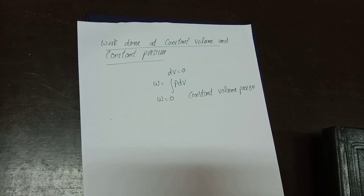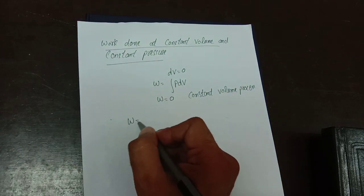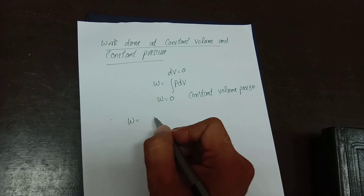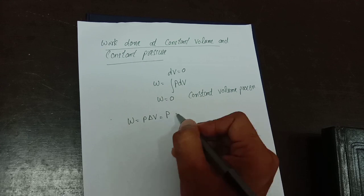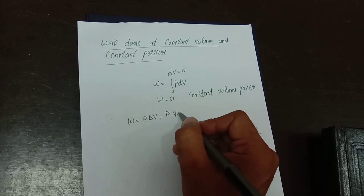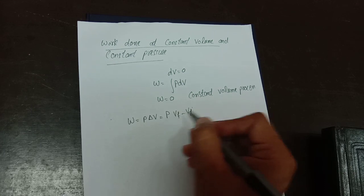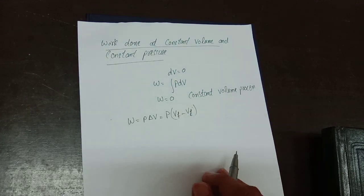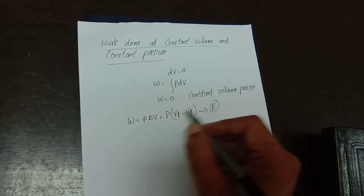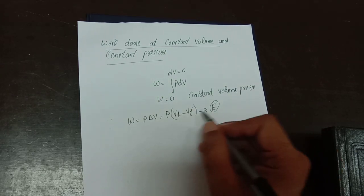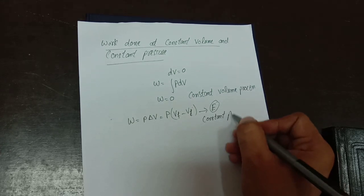For constant pressure, work done is given by W = P × ΔV, where P is pressure and volume changes from Vi to Vf, so W = P(Vf − Vi). This gives the work done by an ideal gas at constant pressure.